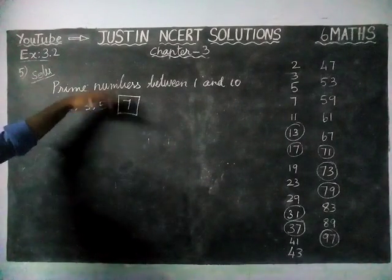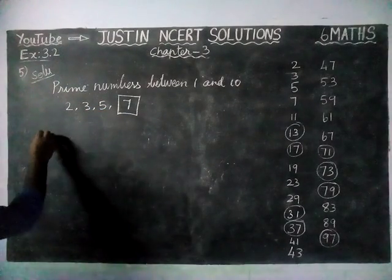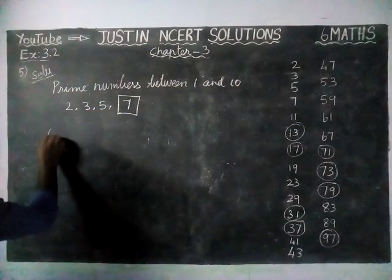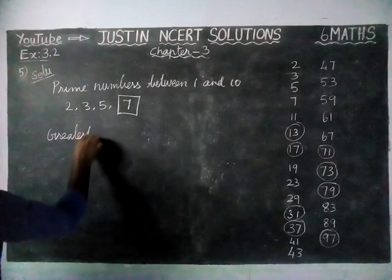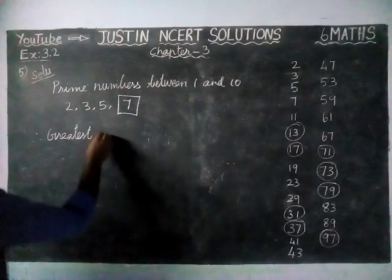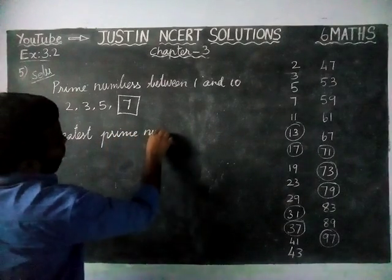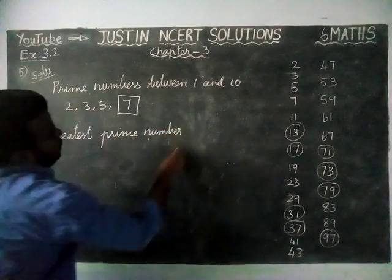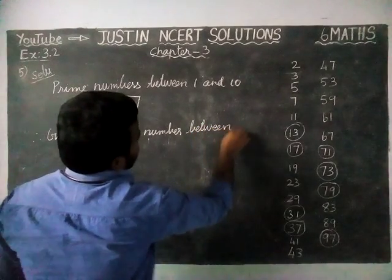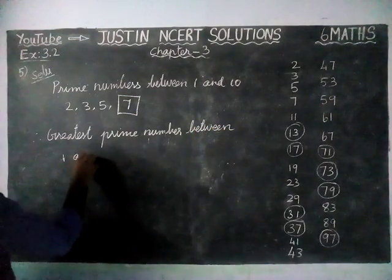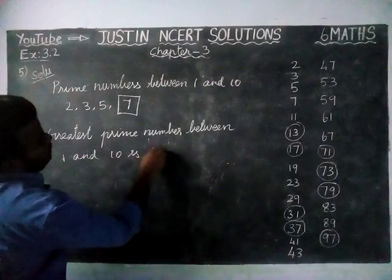Now, we have to find only the greatest prime number. Therefore, the greatest prime number between 1 and 10 is 7.